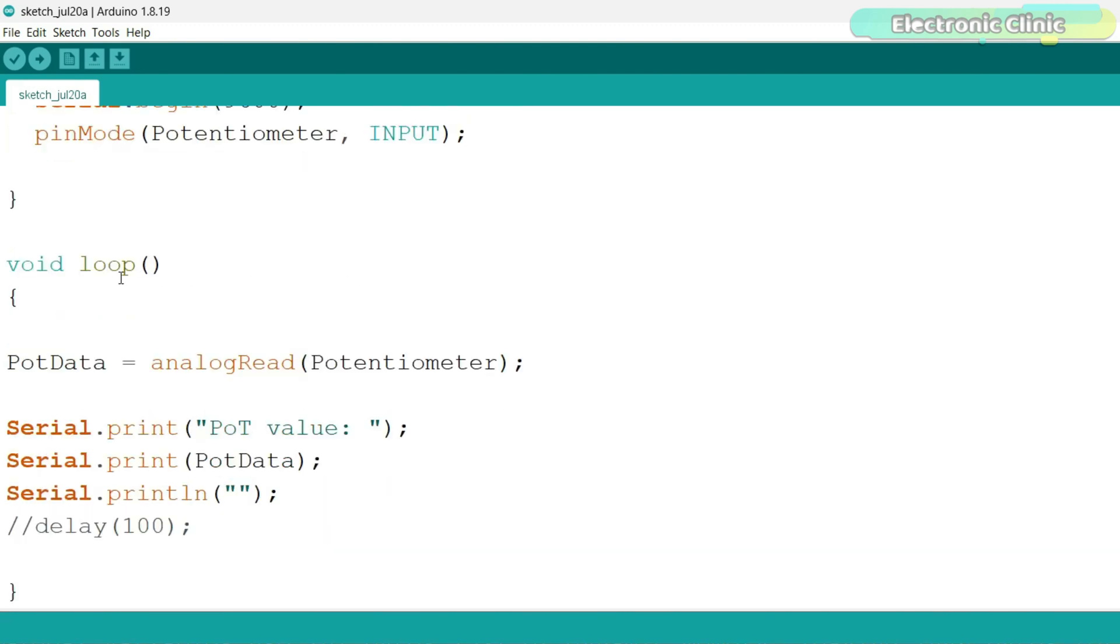Then, inside the loop function, we simply read the potentiometer using the analog read function and store the value in pot data variable. Finally, we send this value to the serial monitor. Let's go ahead and upload this program.